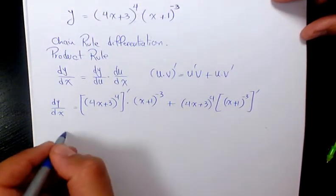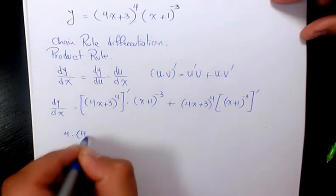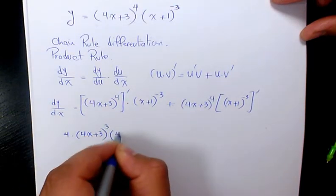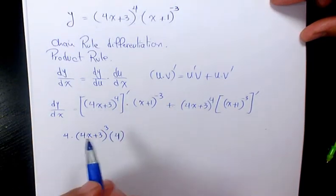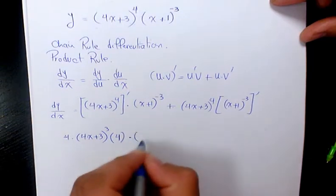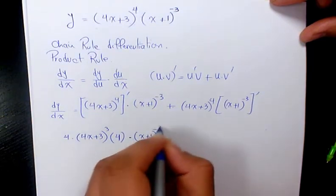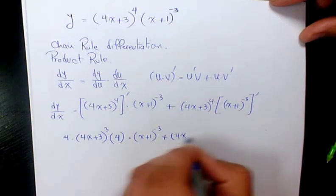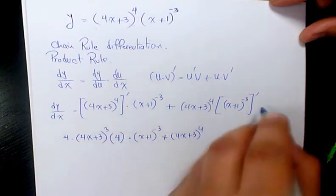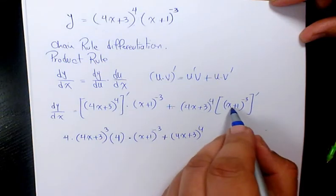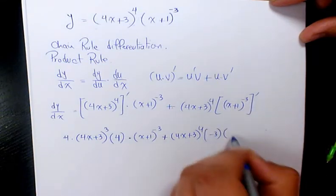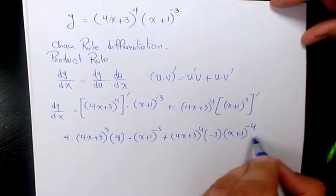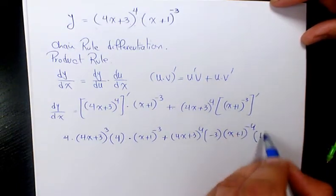So that's going to be 4 times (4x + 3)^3 times 4, which is the derivative of 4x + 3, times (x + 1)^(-3), plus (4x + 3)^4 times negative 3 times (x + 1)^(-4) times the derivative of (x + 1), which is 1.